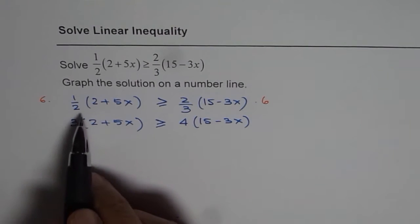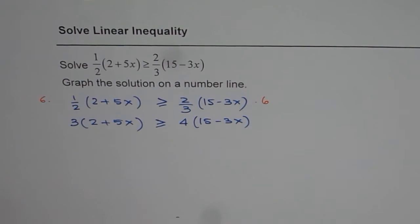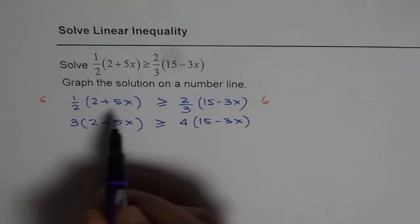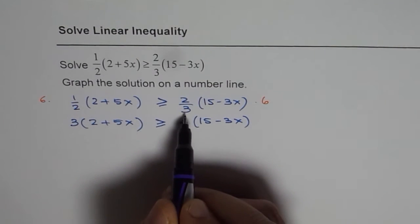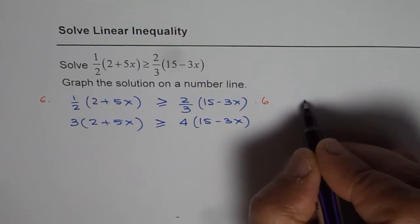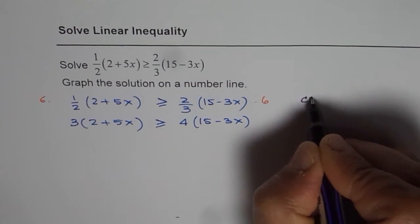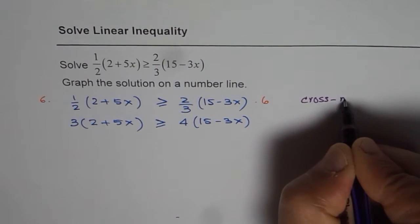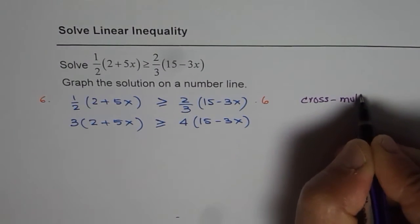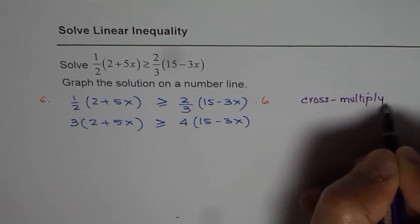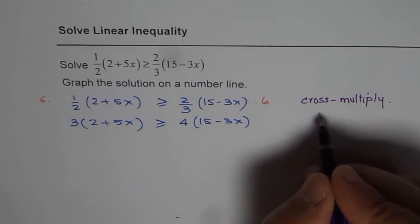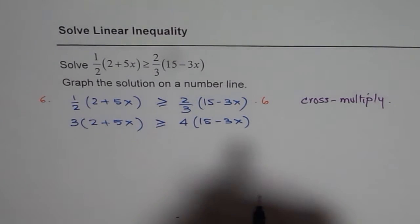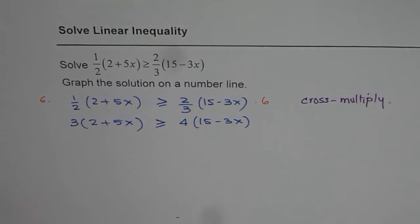Some of you can also treat this as a case of cross multiplication — multiply this part by 2, getting 4, and this part by 3. So you can also cross multiply. Either way, whether you cross multiply or multiply both sides by 6, you get the same result.